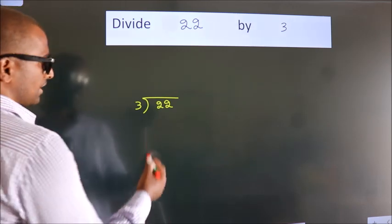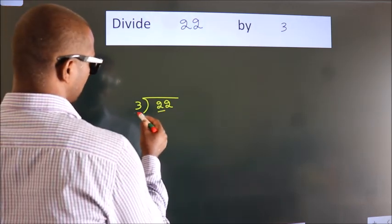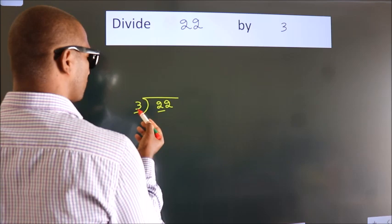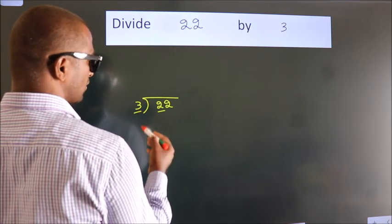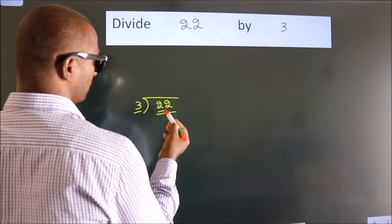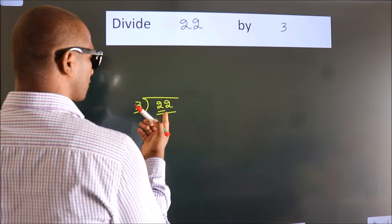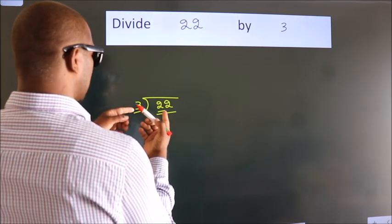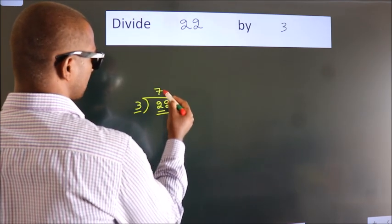Next. Here we have 2, here 3. 2 is smaller than 3, so we should take 2 numbers: 22. A number close to 22 in the 3 table is 3 times 7 equals 21.